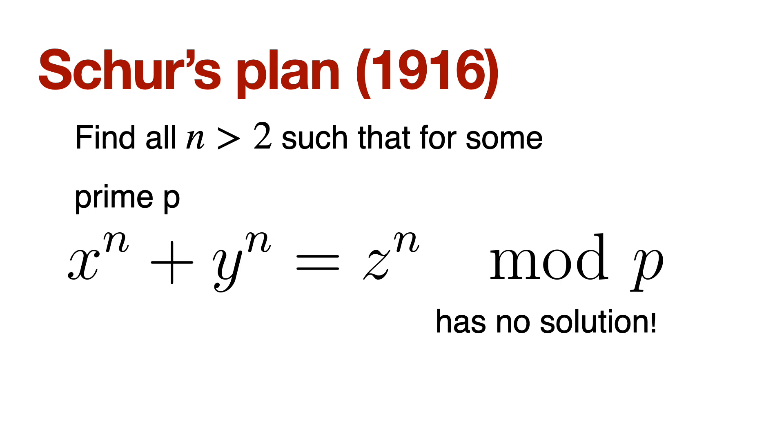A simpler thing to try is what Schur tried is the following. Schur said, well, let me find all natural numbers n such that for some prime p, this equation has no solution. Then at least in that case, I would have proved Fermat's Last Theorem for all those n's, right? Well, even if you could prove that such a set is infinite, that's great progress. You would have proved Fermat's Last Theorem for infinitely many natural numbers n. What happened next, you won't believe.